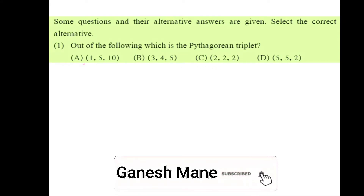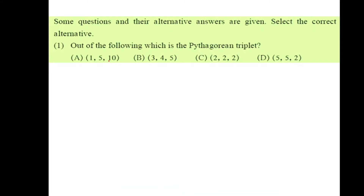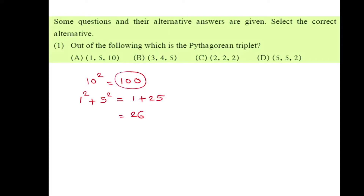Let's start with the first option: numbers 1, 5, and 10. 10 is the largest number, so we square it — 10 squared is 100. The remaining two numbers are 1 and 5, so 1 squared plus 5 squared is 1 plus 25, that's 26. The square of the largest term is not equal to the sum of the squares of the remaining two terms, so the first option is not a Pythagorean triplet.